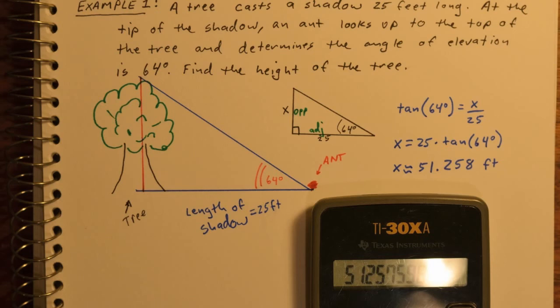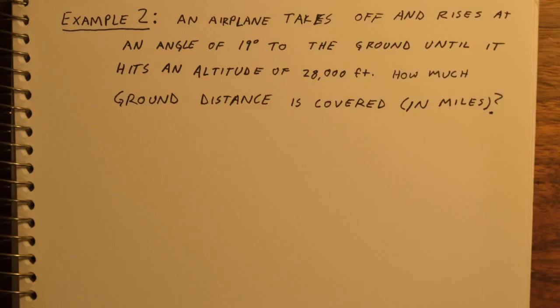Let's try another example. An airplane takes off and rises at a steady angle of 19 degrees until it hits an altitude of 28,000 feet. How much ground distance is covered? Again, we'll want to draw pictures.